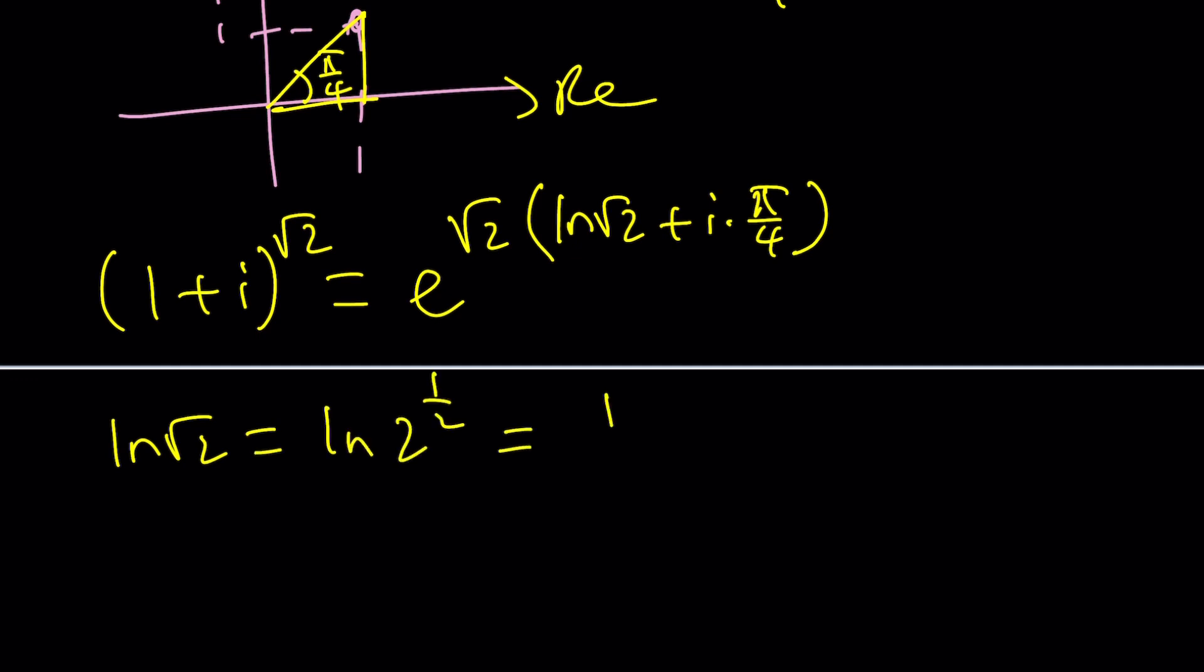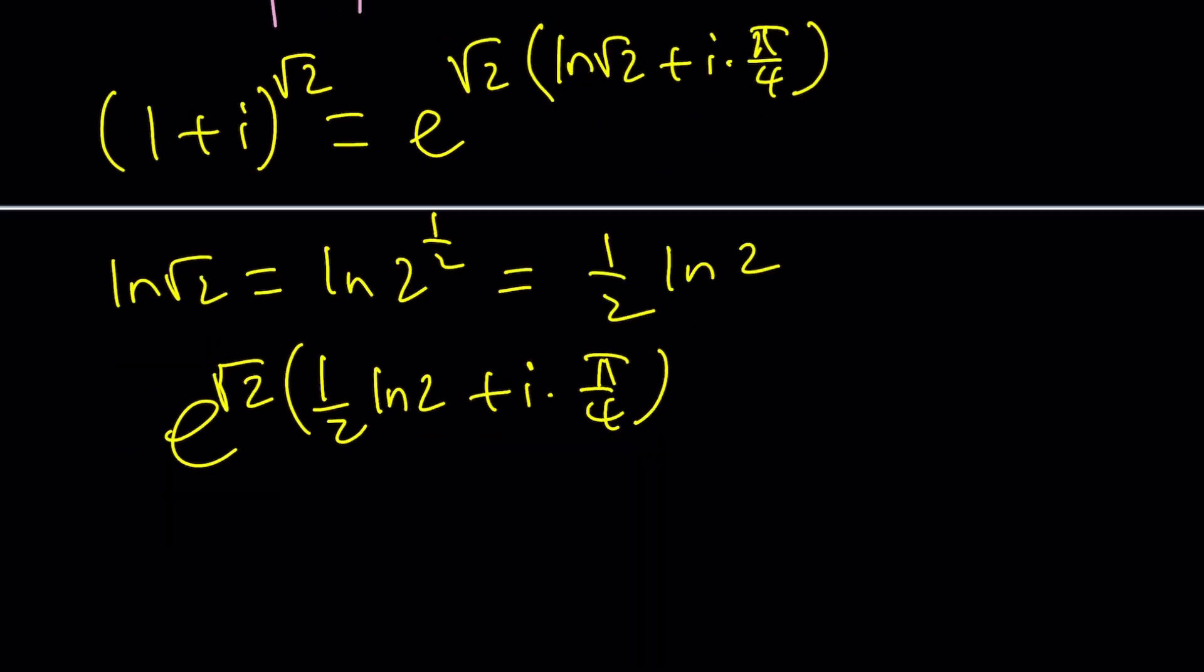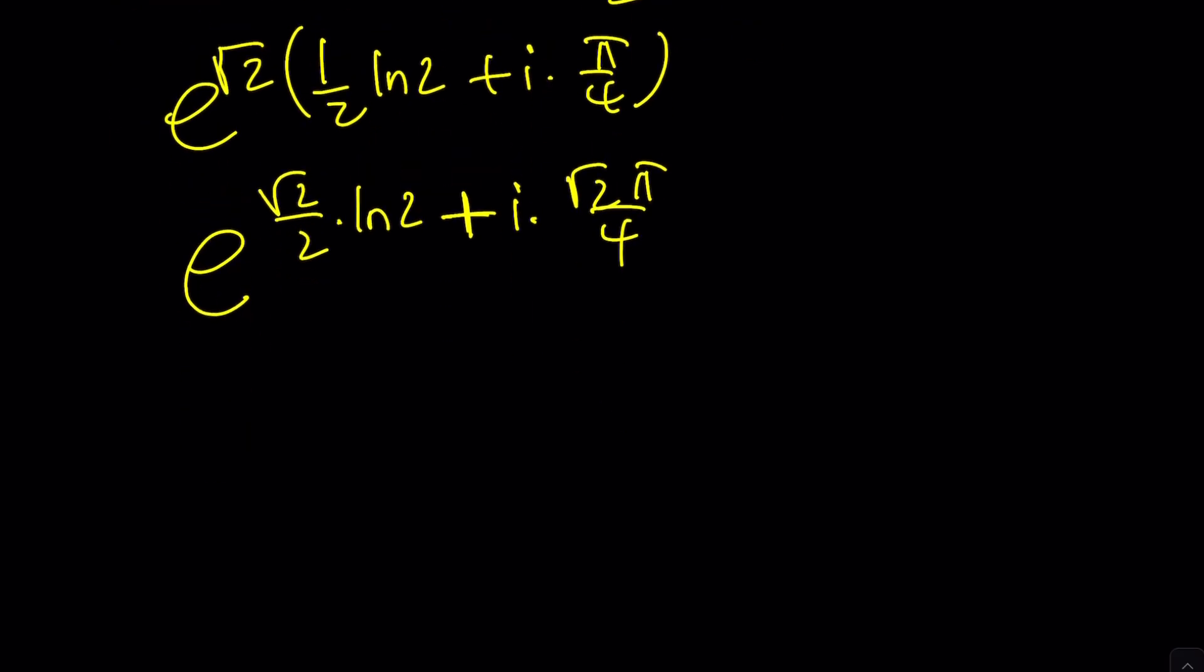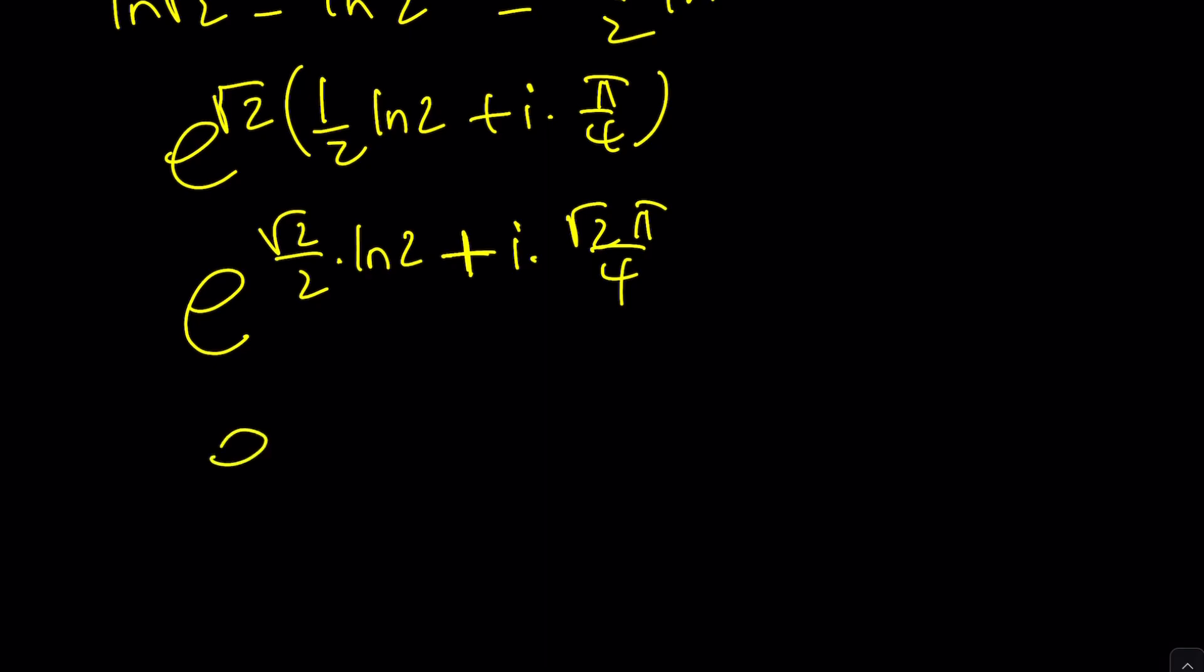Because ln root 2 is ln 2 to the power 1 half. We can bring the 1 half to the front. I write it like this. That'll be e to the power root 2 times 1 half ln 2 plus i times pi over 4. And we're still not done because we need to distribute. This is going to be e to the power root 2 over 2 times ln 2 plus i times root 2 pi over 4. And now we can go and separate this into two pieces. e to the power root 2 over 2 ln 2 times e to the power i times root 2 pi over 4.